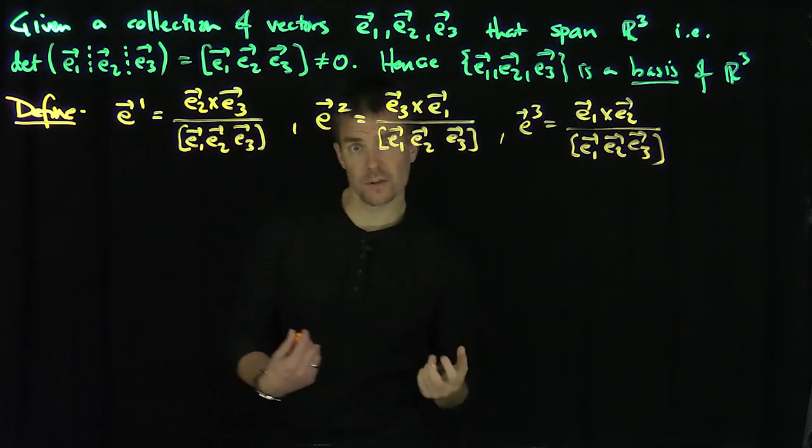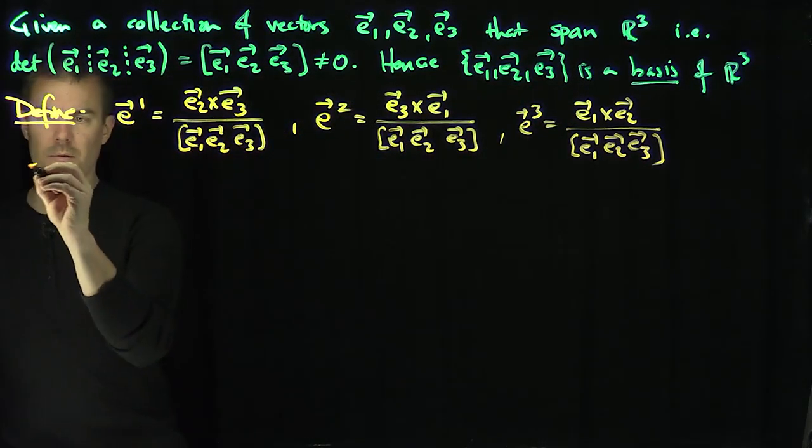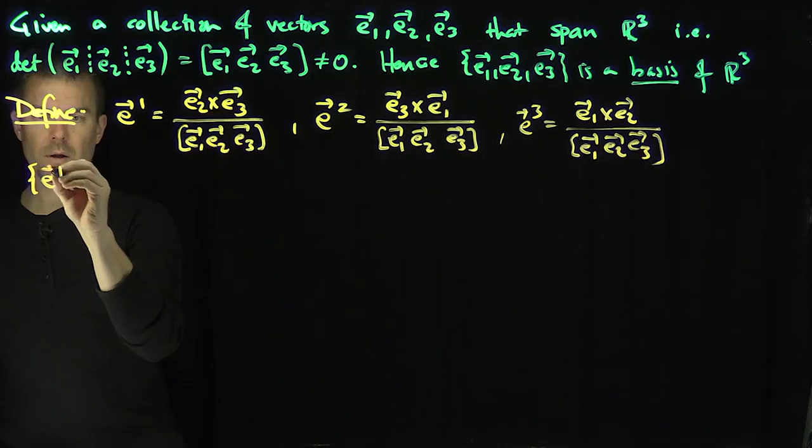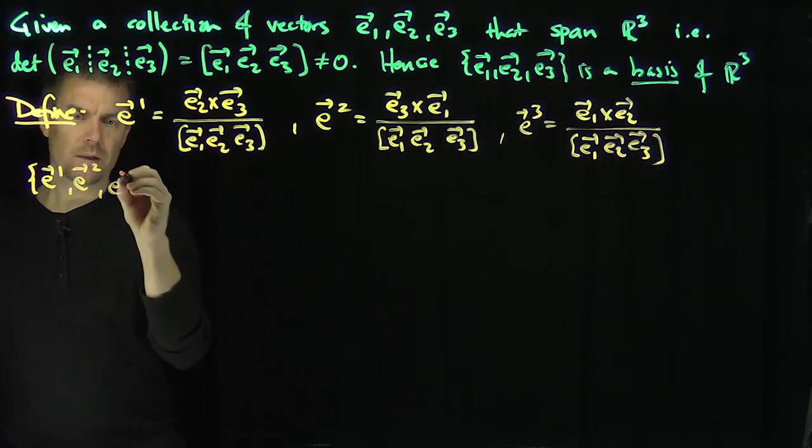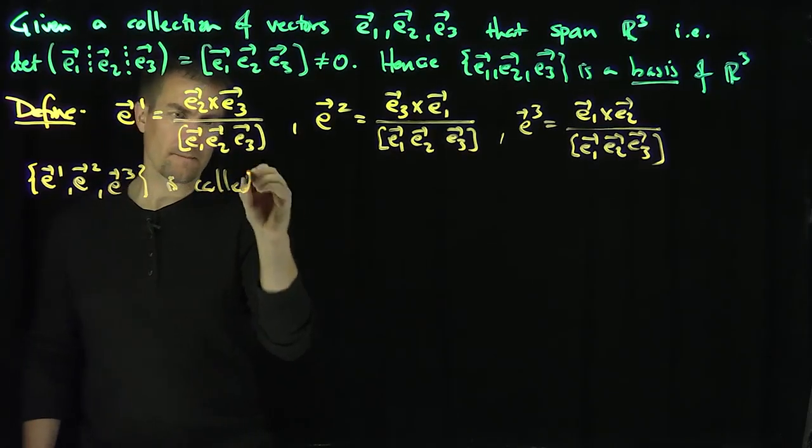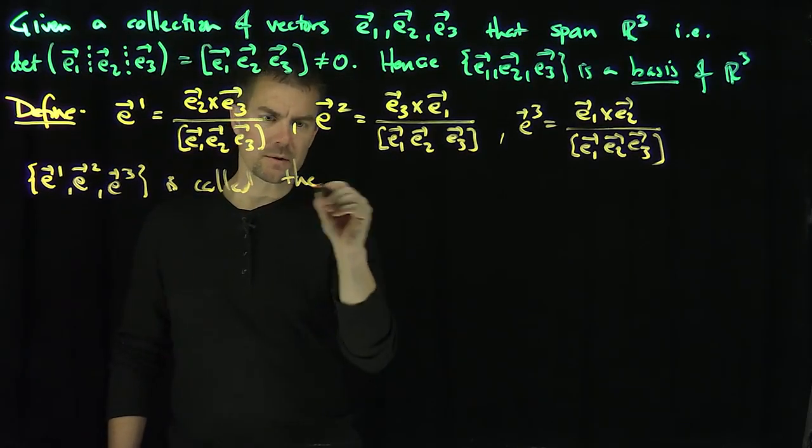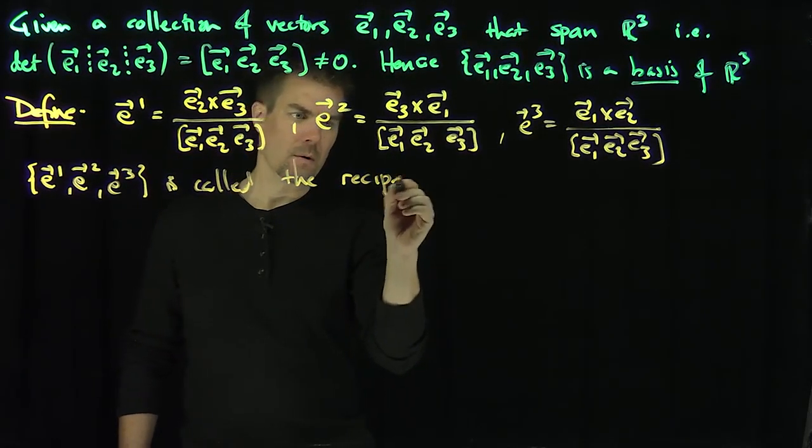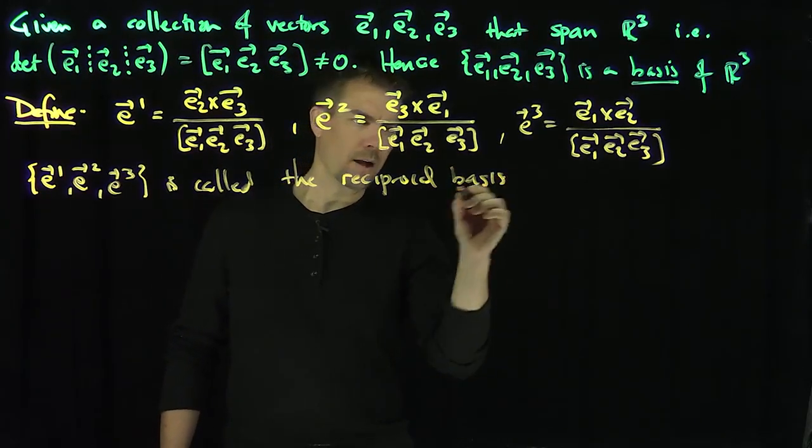And this collection of vectors E1 upper, E2 upper, E3 upper is called the reciprocal basis.